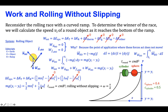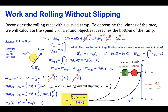Substituting c times mr squared for the moment of inertia I, and v_f over r for the angular speed omega, the r-squared terms cancel in the rotational term. Each term on the right side has a common factor of one-half m v_f squared. Simplifying, canceling the masses, and solving for the final speed v_f, the result shows that the final speed depends on the vertical displacement from y_i to y_f and the coefficient c in the moment of inertia equation. Since the sphere has a smaller value of c than the cylinder, the sphere will have a larger final speed v_f at the bottom of the ramp and will win the race.